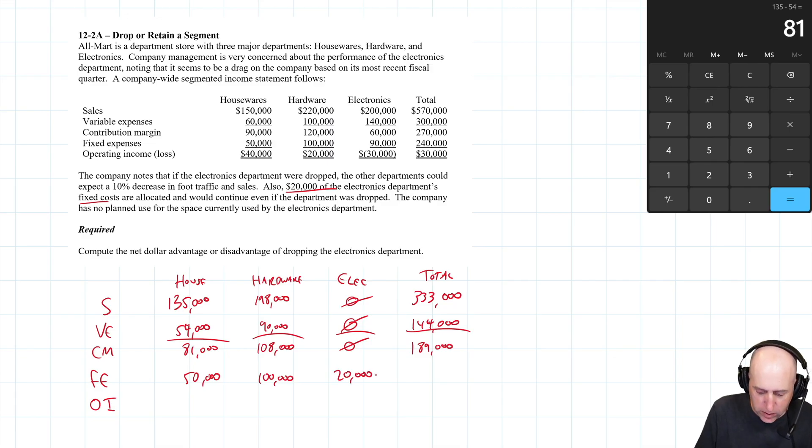Realistically, the company is not going to keep an income statement going for electronics. They're just going to share this $20,000 to hardware and housewares. So they might say housewares is now 60 and hardware is now 110 or something like that. They'll split the 20 grand across the two. But for us, we can just say it stays in the company. How they share it between the departments is up to their management. We just know the total fixed expenses for the company are going to be 170 after this.